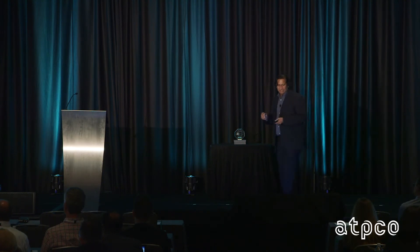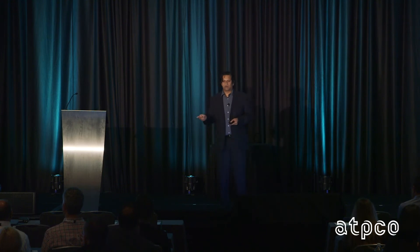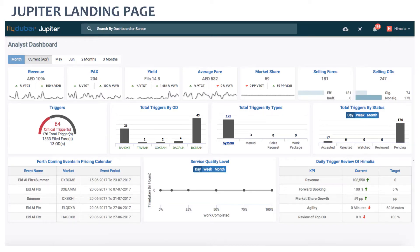Once we have those ratings, we do complete integration with ATPCO fares. We created a single-line record for ATPCO for all categories using MongoDB, a NoSQL database. This is what the pricing analyst sees when they come in the morning: their performance for the current month, next month, next two months, next three months — all key parameters visible at the top.